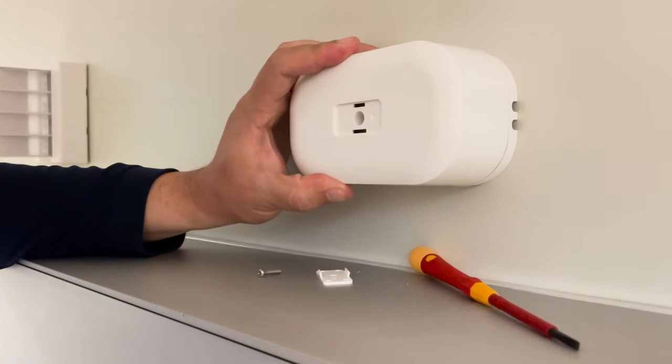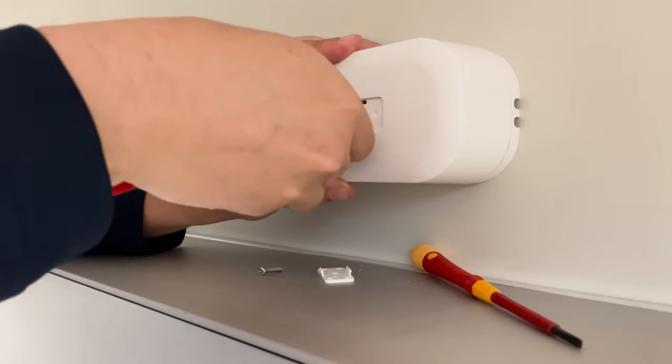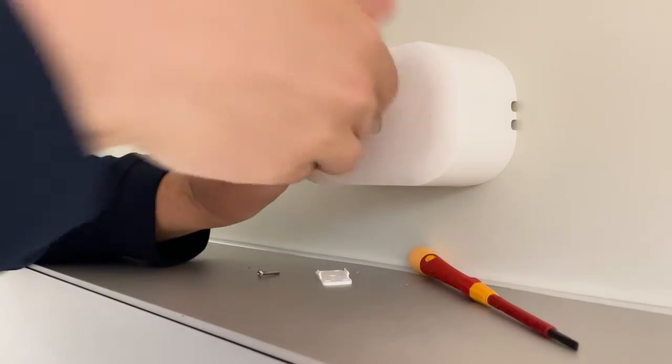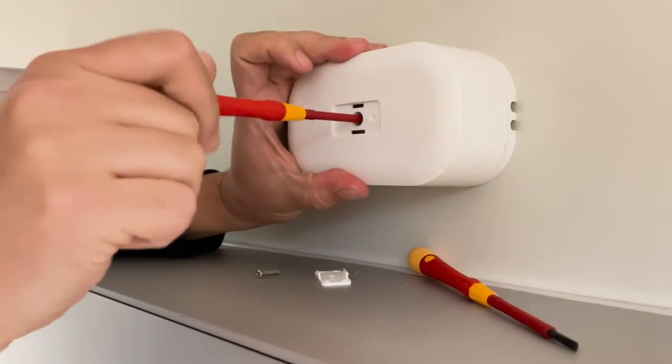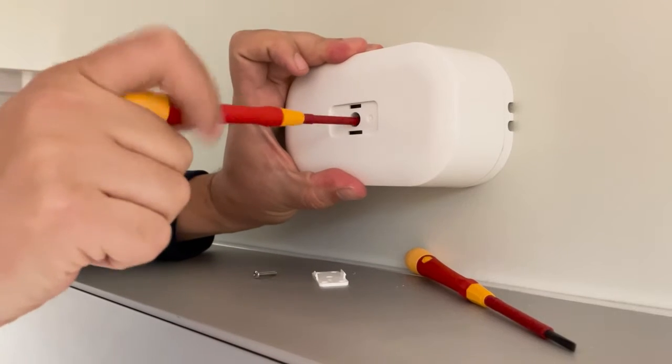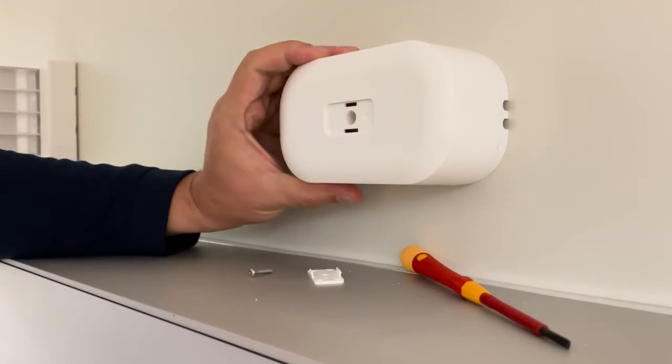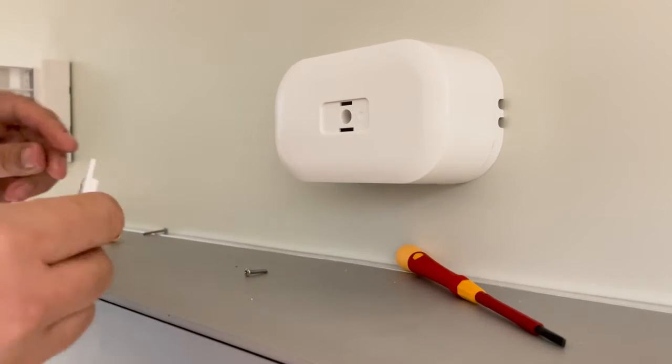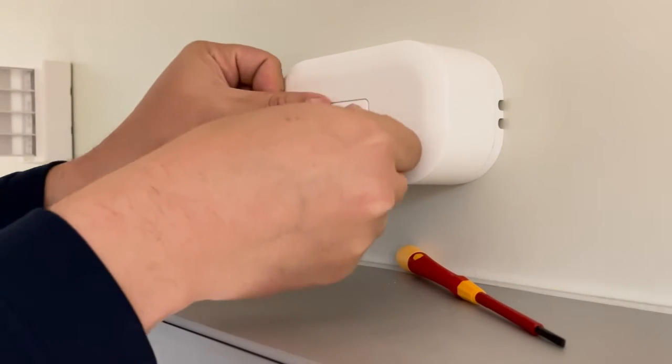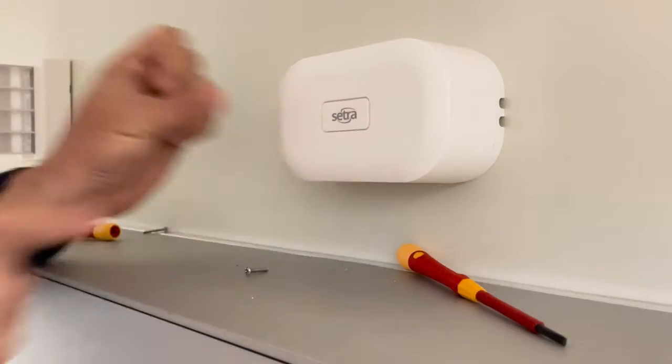After you get the box on, the CETRA kit comes with a new screw that's a little shorter than the old one. Then you need to put on the logo which snaps right in and you're finished.